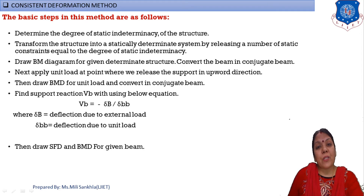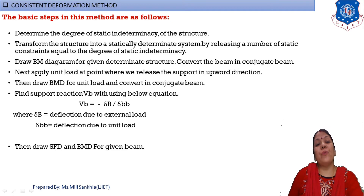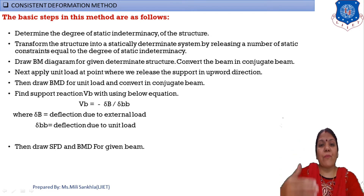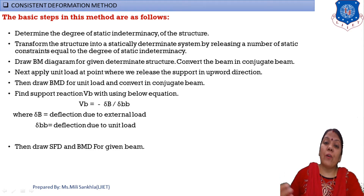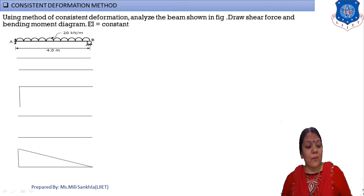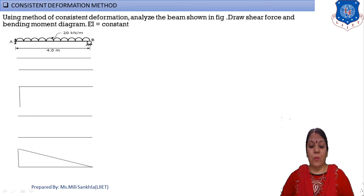After releasing the roller support, convert the beam into a statically determinate structure. Draw the deflected shape and bending moment diagram using the conjugate beam method to find deflection. Then apply a unit load at the point of the released roller support. This is the basic step for the consistent deformation method, which uses the concept of the conjugate beam method. Now we start with our first example.